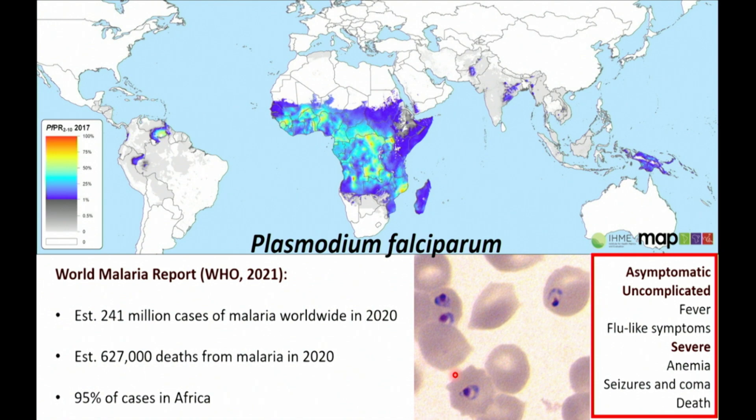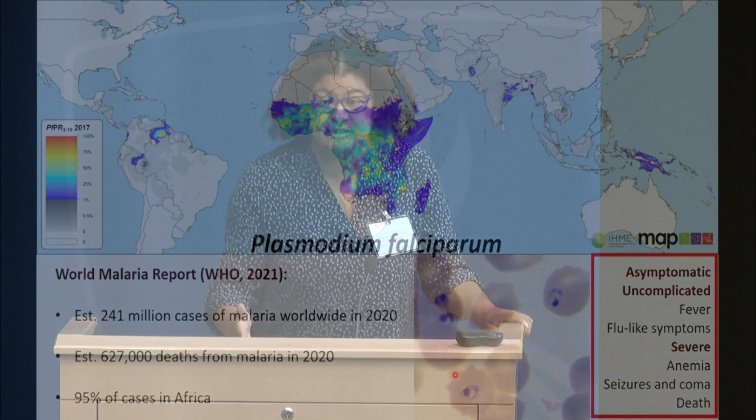We know that host immunity and parasite factors are major determinants of disease severity, but we've been interested in whether other factors play a role as well — things such as the nutrition of the individual, the metabolism of the host, and we also have some work looking into the gut microbes. But today, I really wanted to focus on our work looking at the plasma metabolome.